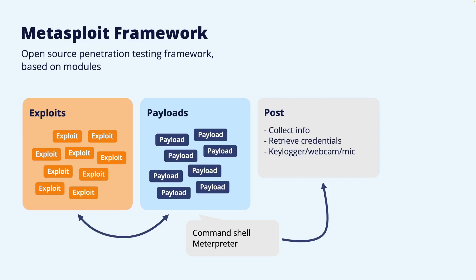Another type of module is the auxiliary type. These modules help accomplish miscellaneous tasks that might be required for exploiting vulnerabilities, including scanning for the presence of vulnerabilities, sniffing on traffic and data, and implementing certain server functionality that could be part of a successful attack.